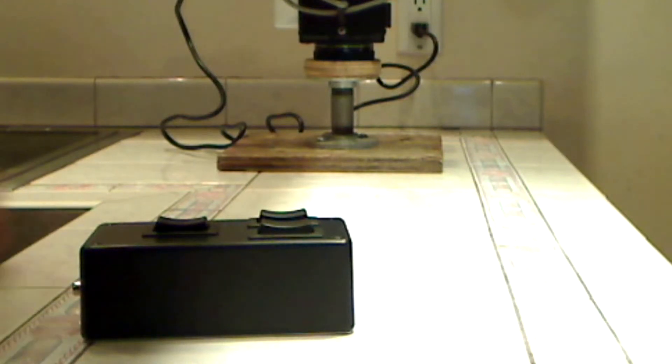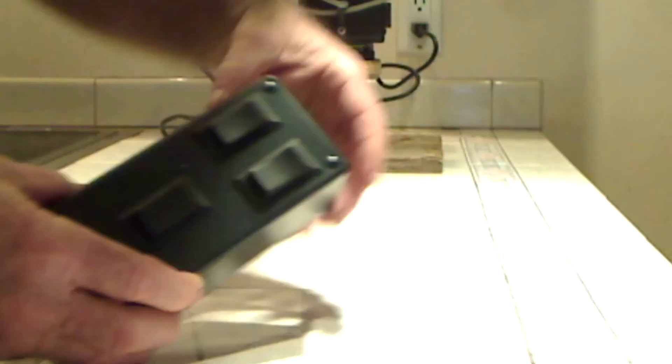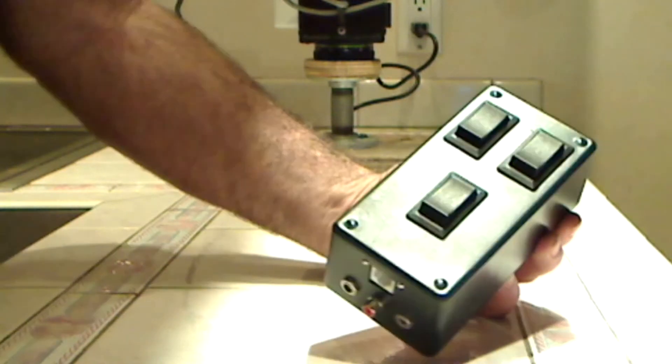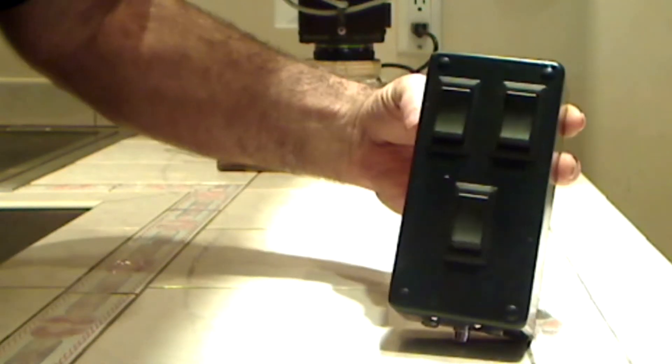I'm going to make one long one. Now this is the controller. Check this out, man. Pan, tilt, and zoom. That's what those buttons are for.